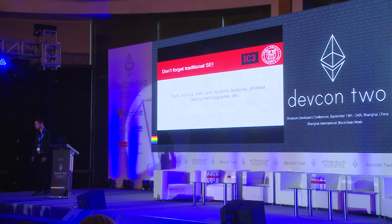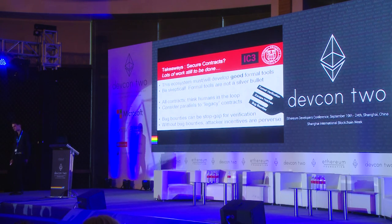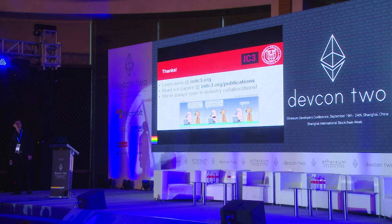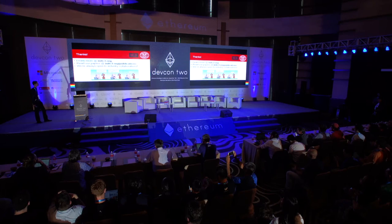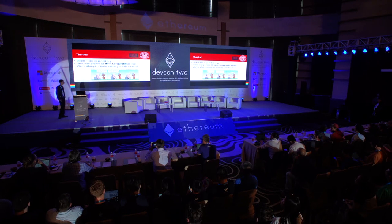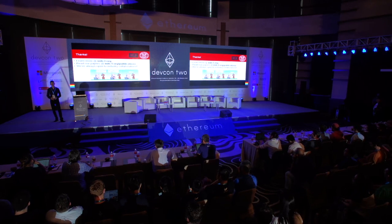Takeaways: we've got lots of work still to do here. The ecosystem will definitely develop good formal tools — we have a number of talks on this. Think about humans in the loop when you're writing your smart contracts, and use bug bounties as a stop-gap for verification and incentive fixes. Thank you for listening. Please check out our website at initc3.org, our publications, and contact us — we are always looking for industry collaborations and partners to solve the open research problems in this space.